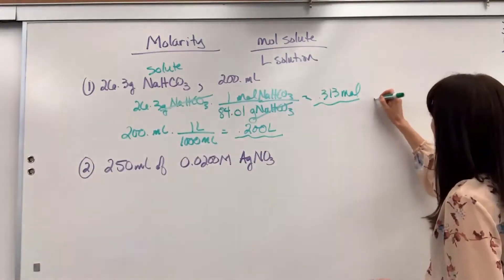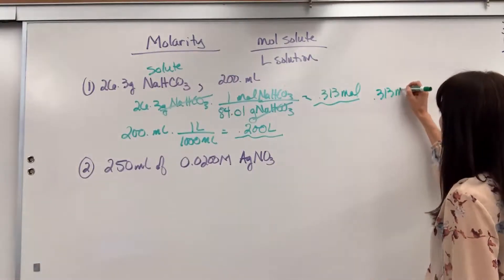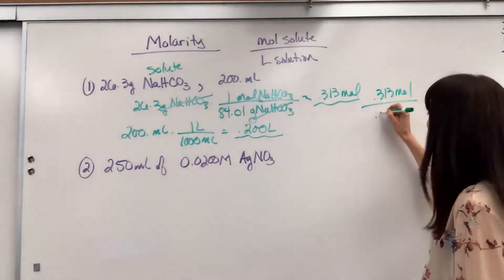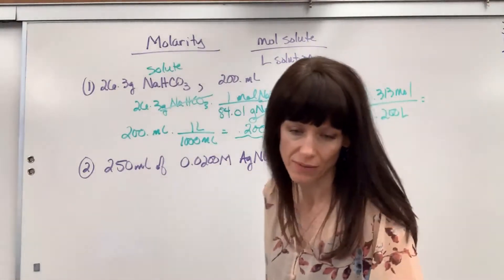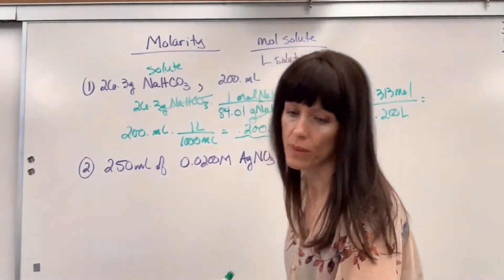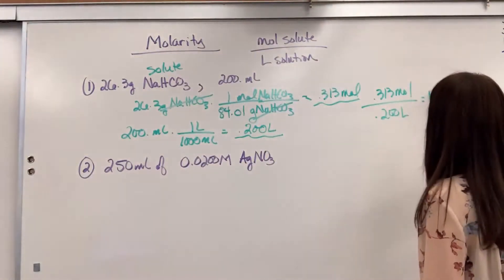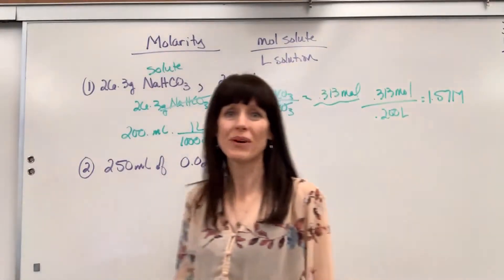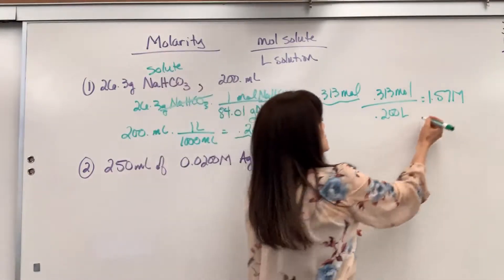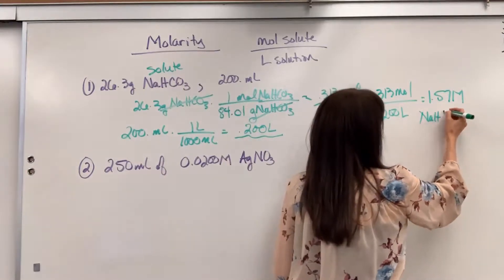So we will have 0.313 moles divided by 0.2 liters and that is going to give us 1.57 molar. 1.57 molar sodium hydrogen carbonate.